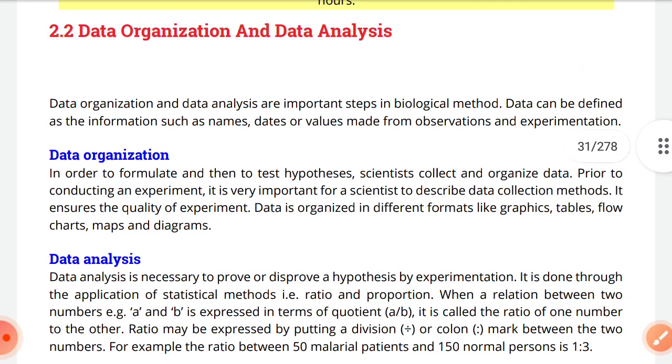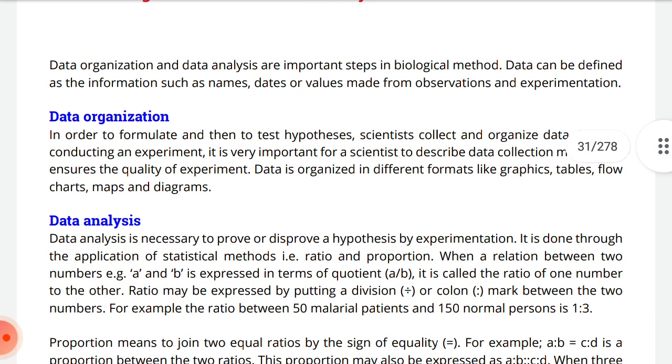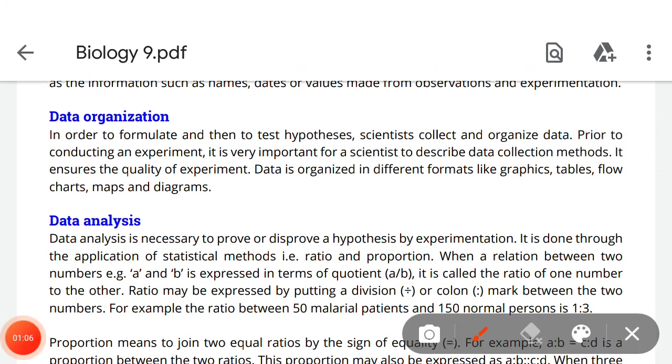The first thing is you have data, you have to organize in a specific order in any form - in a table form or in a graphical form. You have to arrange data in order to formulate and then to test hypothesis. Scientists collect and organize data prior to conducting an experiment. It is very important for a scientist to describe the data collection methods. It ensures the quality of experiment. Data is organized in different formats like graphics, tables, flowcharts, maps and diagrams.